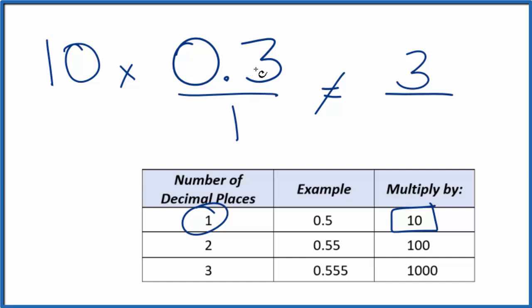But 3, that's not equal to 0.3. We need to multiply the top and the bottom by 10. In effect, 10 over 10, that's just 1. So we're really multiplying by 1. We're not changing the value just the way it's expressed.